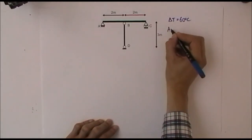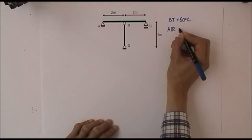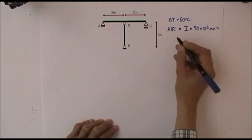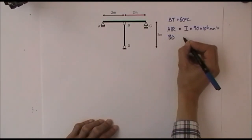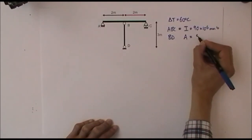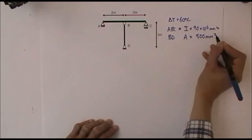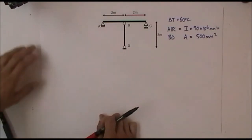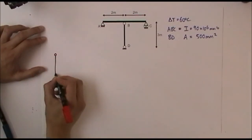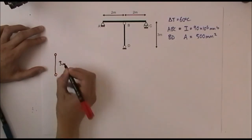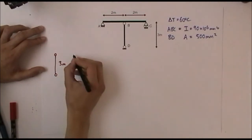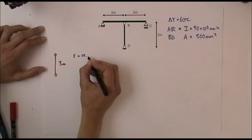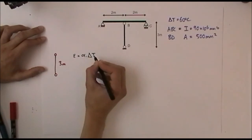We find in the question that the beam ABC has an I value of 90 times 10 to the 6 millimetres to the 4, and the column BD has a cross-sectional area of 500 millimetres squared. If we just considered column BD and said that the column alone was subject to an increase in temperature of 60 degrees centigrade, then the strain in the column would be equal to the coefficient of thermal expansion times the change in temperature.